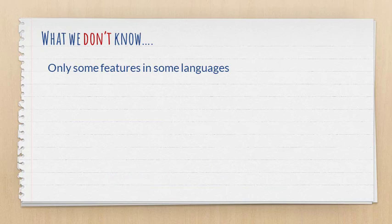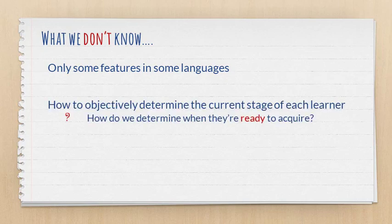There are also things we don't know. First, we don't know the order for all features of all languages — it's only been documented for some languages. And something else we don't know is how to objectively determine the current stage of each learner. How do we determine when they're ready to acquire a particular feature? These are the main reasons why we should be careful about how we try to apply what we know about developmental sequences to the classroom.